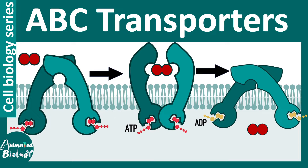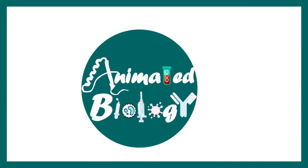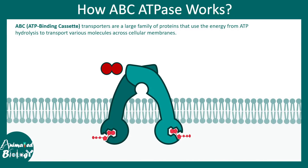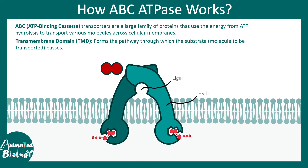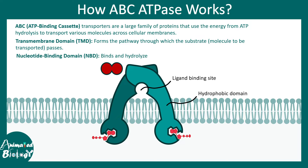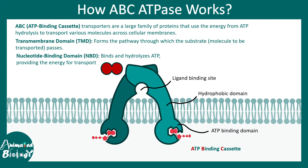In this video we'll talk about ABC transporters, which are one type of ATP-powered pumps. ABC transporters, also known as ATP binding cassettes, are a large family of proteins which utilize the energy from ATP hydrolysis. Structurally, they have a transmembrane domain embedded into the membrane, a ligand binding domain which binds to the ligand, and a nucleotide binding domain which binds to ATP.